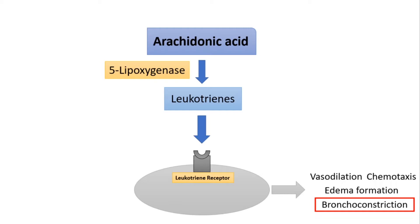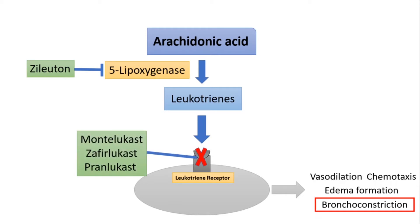The first drug I want to talk about today is called zileuton. Zileuton inhibits the enzyme 5-lipoxygenase, thus it will inhibit the production of leukotrienes. Other leukotriene inhibitors include montelukast, zafirlukast, and pranlukast, which work by inhibiting the leukotriene receptor.